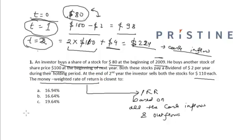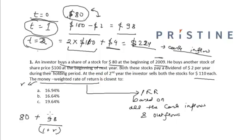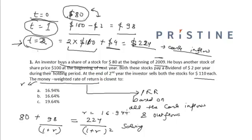The money weighted rate of return is the IRR based on these cash inflows and outflows. Setting up the equation, let R be the money weighted rate of return. Then: 80 + 98/(1+R) = 224/(1+R)². Taking the present value of all cash outflows equal to the present value of inflows and solving this equation, we get R = 16.94%. So the correct answer is option A: the money weighted rate of return is 16.94%.